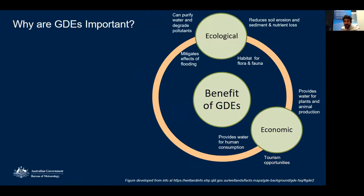The second reason is economic. GDEs provide water for plant and animal production — agriculture and farming are big contributors to the economy. They provide tourism opportunities, with Kakadu being an obvious world-famous example. They also provide water for human consumption.